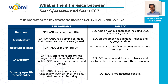Architecture: S4 HANA has a simplified module that makes use of a universal journal, while ECC uses additional indexes and aggregate tables. User experience: SAP S4 HANA uses SAP Fiori UX, while ECC uses a GUI interface that may require more training. Integration: S4 HANA offers more streamlined integration with SAP solutions such as SAP SuccessFactors, Ariba, and Concur, while SAP ECC requires additional middleware and customization. Industry-specific functionality: S4 HANA offers industry-specific functionality such as oil and gas, retail, and manufacturing, while ECC does not.